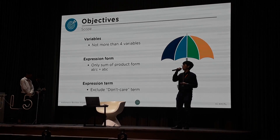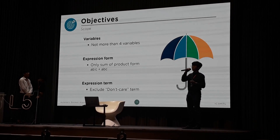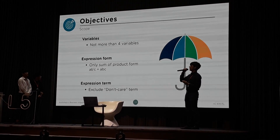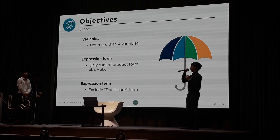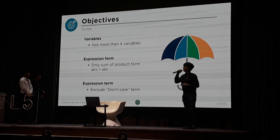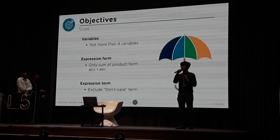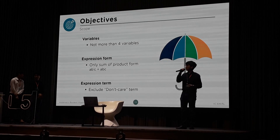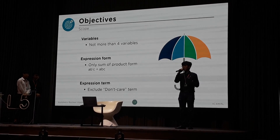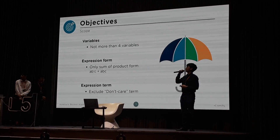As for expression form, we are going to cover the sum-of-products form — for example, A AND B' AND C, OR with the product of A AND B AND C. We are also going to exclude the don't-care term, which is the term we could neglect or ignore when factoring out or identifying more meaningful terms. That is our scope and objective.